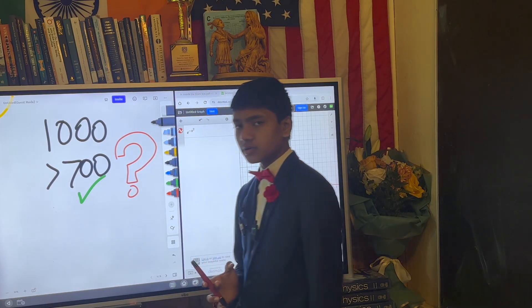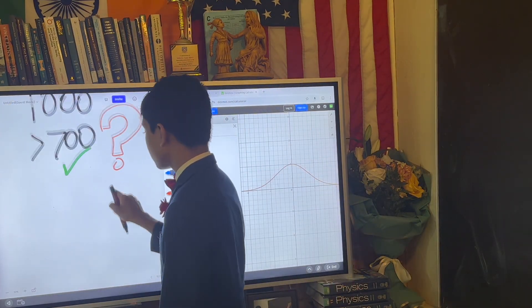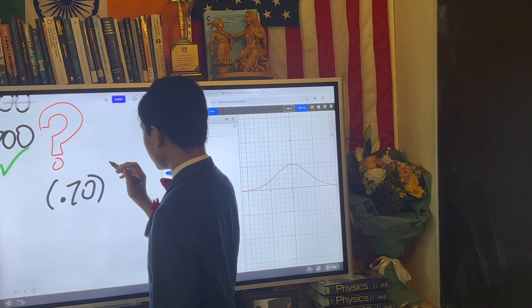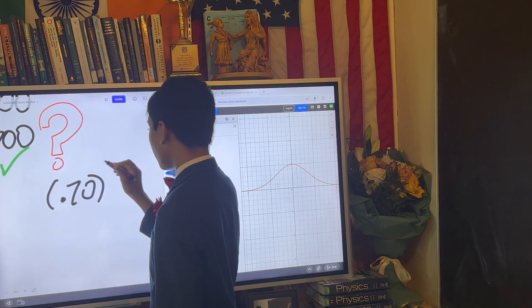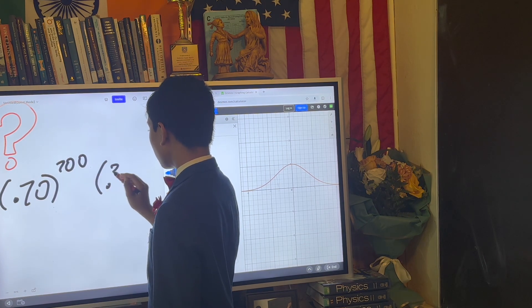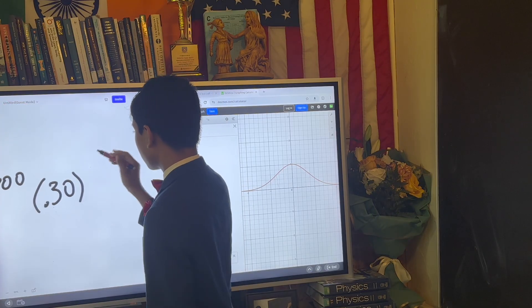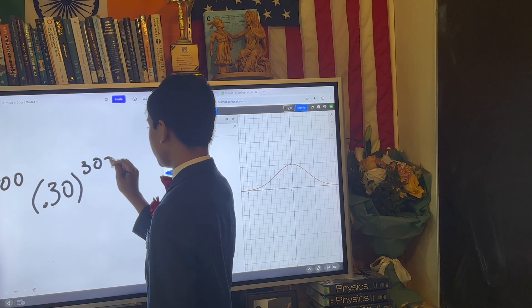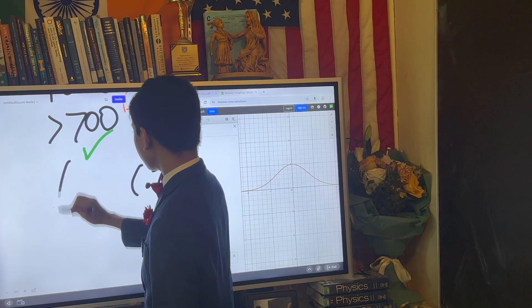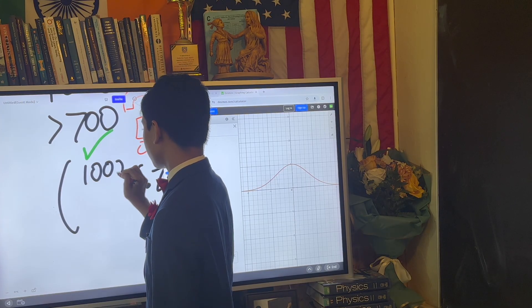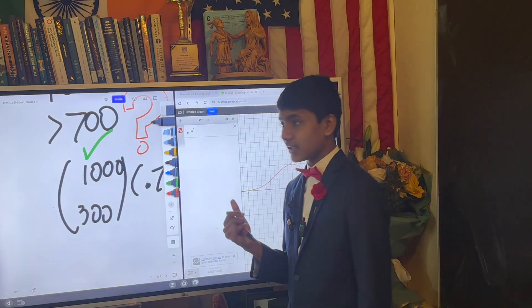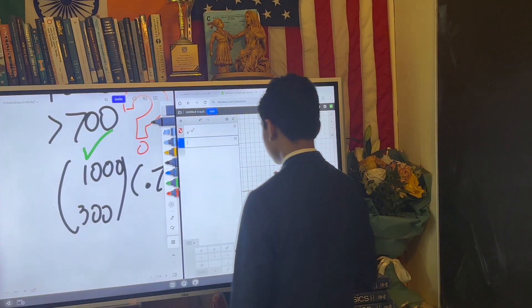Well, first, you take the probability that somebody says yes, I like the mayor, and repeat that 700 times. Then you take the probability that someone says no, I hate the mayor, and repeat that 300 times. Then you multiply that by 1,000 choose 300. Yeah, let's see if Desmos can calculate that. What's 1,000 choose 300?